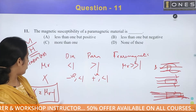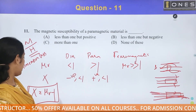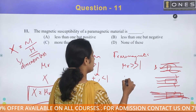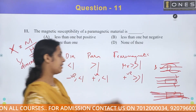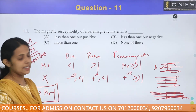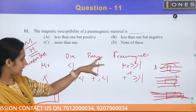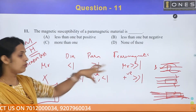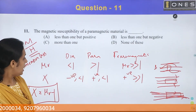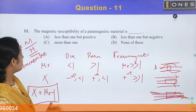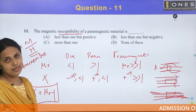For ferromagnetic material, the susceptibility is a large positive quantity, much greater than 1. This is the general range of susceptibility values for the three classes of magnetic materials.